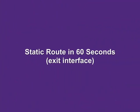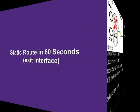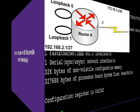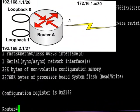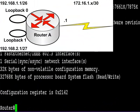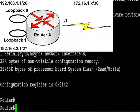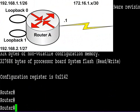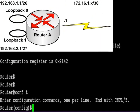Hi, it's Paul Browning from HowToNetwork.net. We're going to configure a static route in 60 seconds using an exit interface. Very handy if you don't know where your next hop is, and this is CCNA level stuff, so you need to know this for the exam.